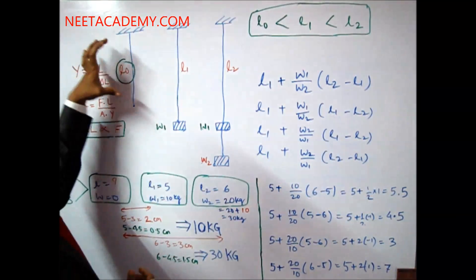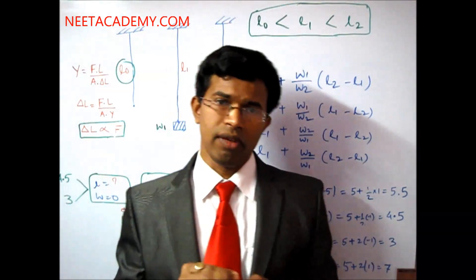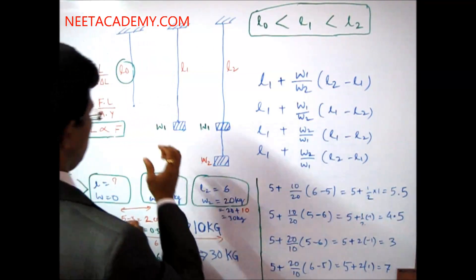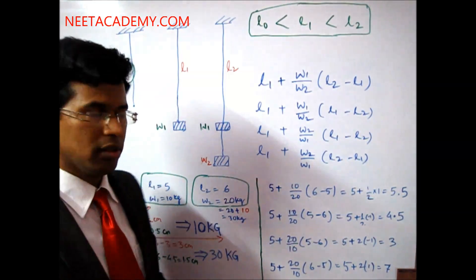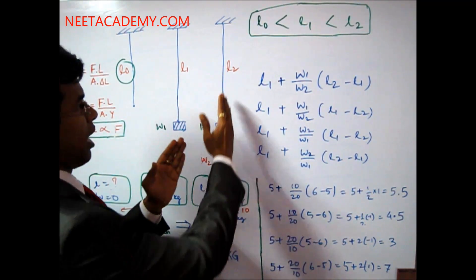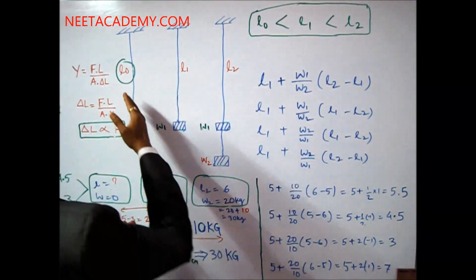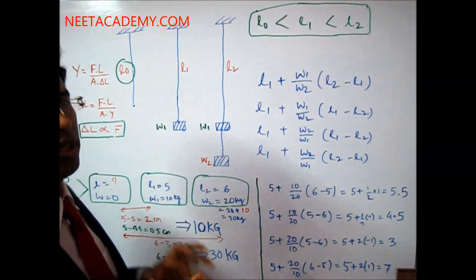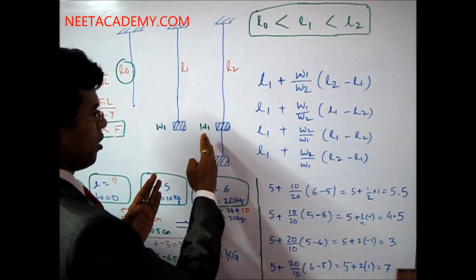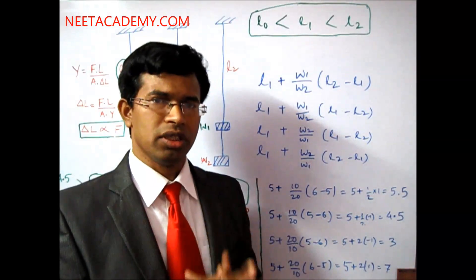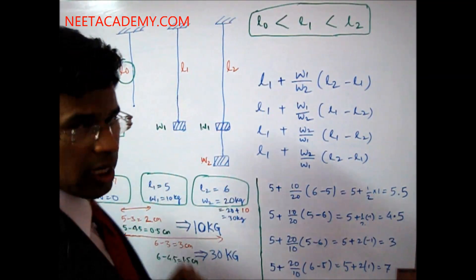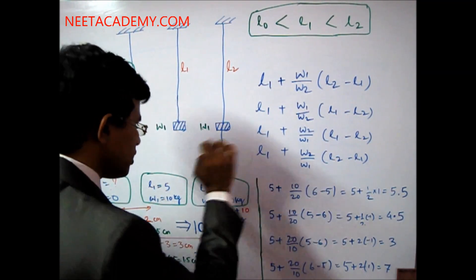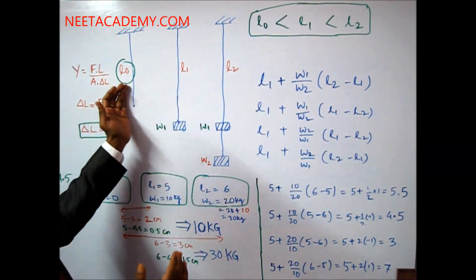The question is: you are given a wire stretched from a fixed surface. If you add a weight w1, the length of the wire becomes l1. If you add additional weight w2, the length of the wire becomes l2. You are asked to find the natural length — the original length l0 of the wire when there was no weight applied — in terms of l1, w1, l2, and w2.